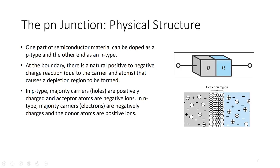In P-type, there are more holes than electrons; in N-type, there are more electrons than holes. In P-type, the majority carrier holes are positively charged. The group-3 acceptor atoms, which have accepted an extra electron, are now negative ions — they are fixed, not carriers. They are shown in the diagram as a negative charge surrounded by a circle, meaning they are bound and not free to move.